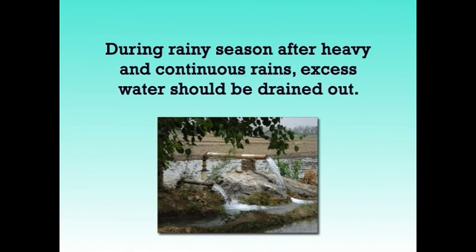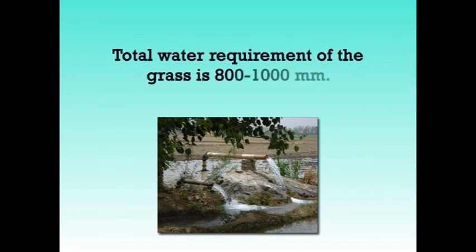We will discuss about water management. The first irrigation is done immediately after planting and the next on the third day of planting. Subsequent irrigation is generally provided at weekly or about 2-3 weeks interval depending on soil moisture status. After the crop has established completely, irrigation at intervals of a fortnight or so is sufficient. During rainy seasons, after heavy and continuous rain, excess water should be drained out. Total water requirement of the grass is 800-1000 mm.